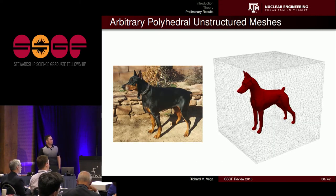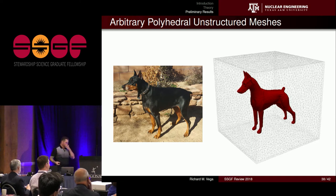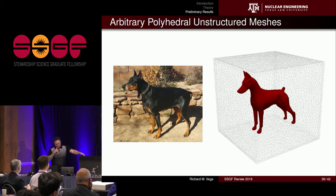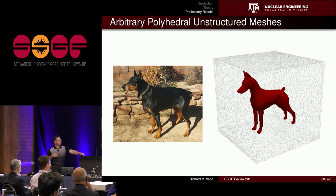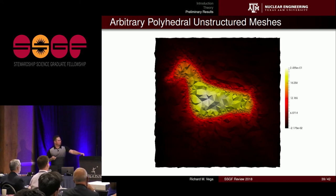My advisor asked for a real-world problem. My initial proposal — what if my dog were made out of plutonium as a volume source? — was not accepted, but it makes a good slide. The source is my dog, and what's shown is the scalar flux at the mid-plane of the dog mesh. I still need to come up with a better real-world problem.